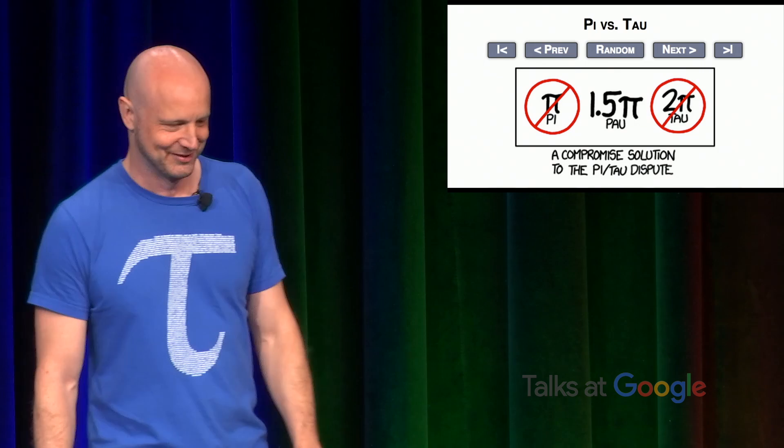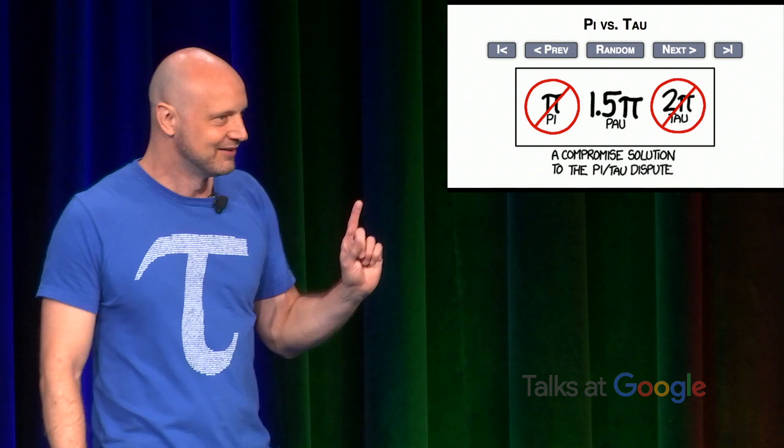Tau made it into the iconic geek comic strip, XKCD, where Pi versus Tau proposed compromise to the Pi-Tau dispute. Not to be outdone, another iconic geek comic strip, Saturday Morning Breakfast Cereal, or SMBC, made this comic. The father says, hey, little monkey, can you tell daddy how many fingers is this many fingers? Two fingers later. So my two-year-old calculated the Pi-Tau conversion constant.